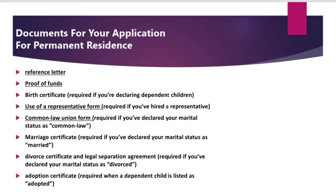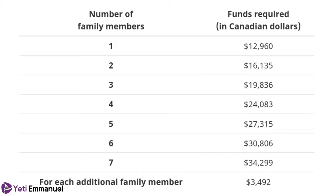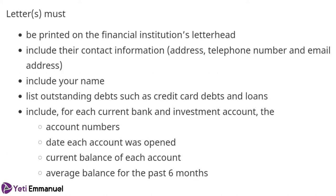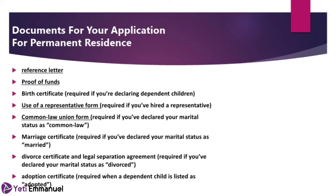You'll also be asked to do a medical examination at designated clinics assigned by Canada — you can find these on the IRCC website. Proof of funds is very important. The amount required depends on your family size, and you'll need to submit six months of bank statements to show you can settle without government assistance. You'll also need birth certificates for yourself and your children — including adoption certificates if applicable — and ensure the name on your birth certificate matches your passport.